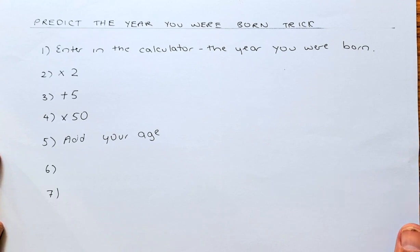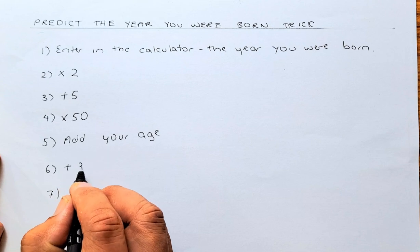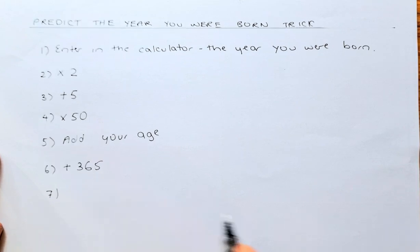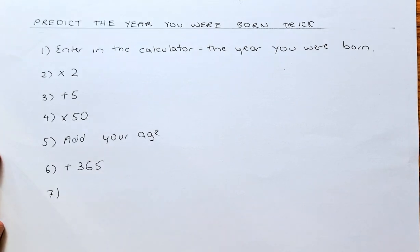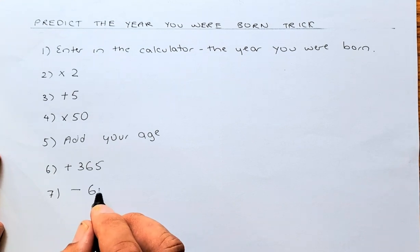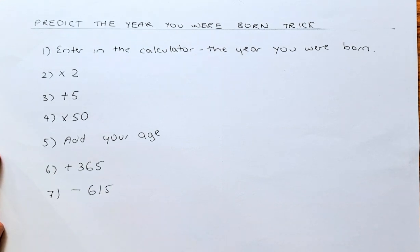Now, the last 2 steps require some mathematics operation. The first one, you are going to add plus 365. And the last but not least, you are going to take away 615 from the total.